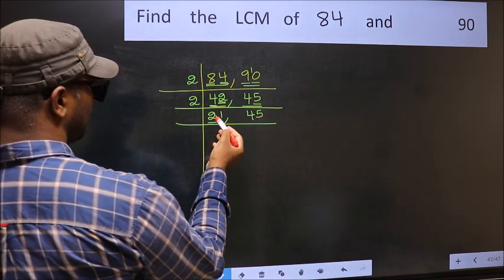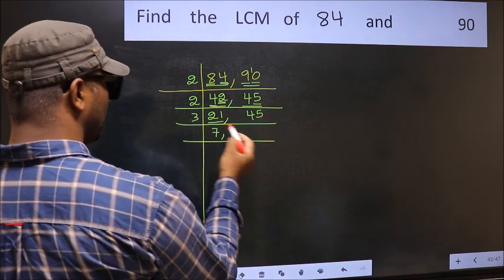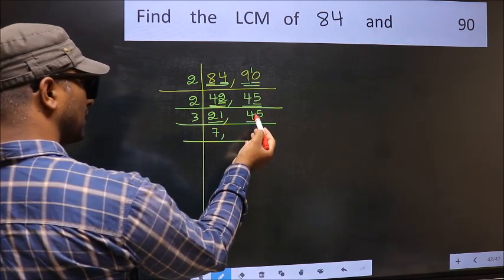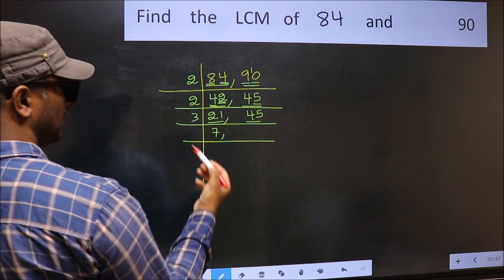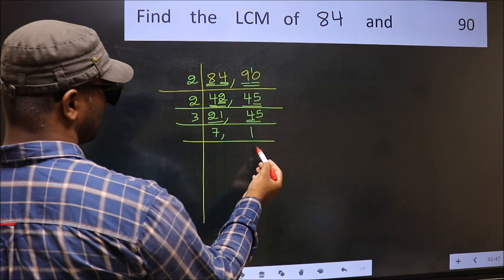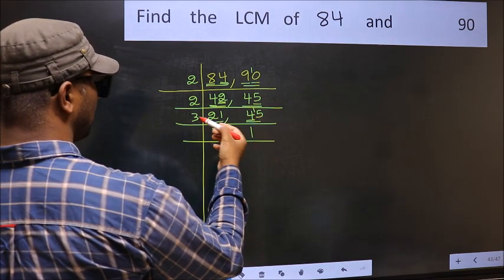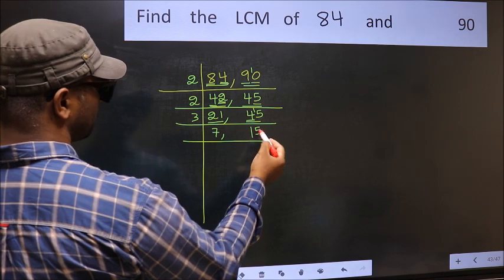Now here we have 21. 21 is 3 7s 21. The other number 45 is divisible by 3. First number 4. A number close to 4 in 3 table is 3 1s 3. 4 minus 3 is 1. 1 carried forward makes 15. When do we get 15 in 3 table? 3 5s 15.